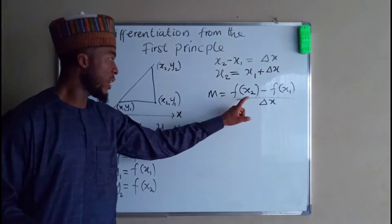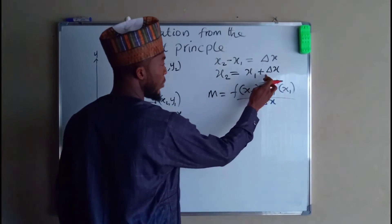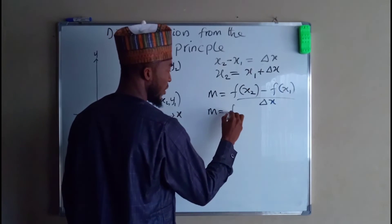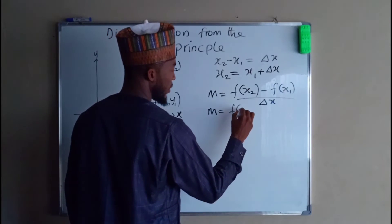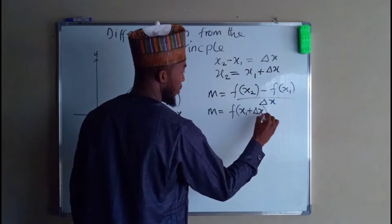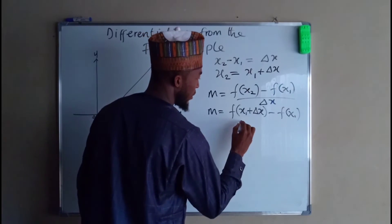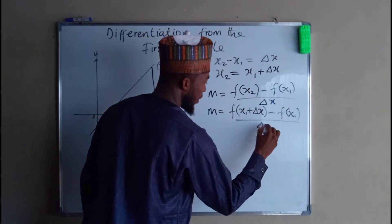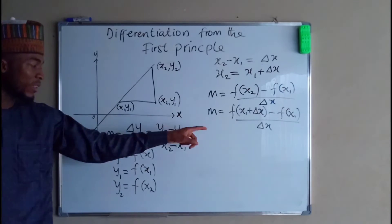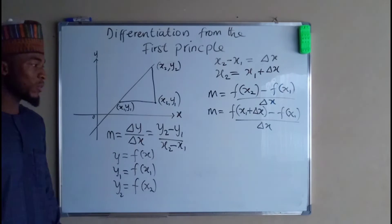But this x2 here is x1 plus the change in x. So M equals f of x1 plus the change in x, minus f of x1, divided by the change in x. And you know that this M is nothing but change in y divided by change in x, which is our slope.